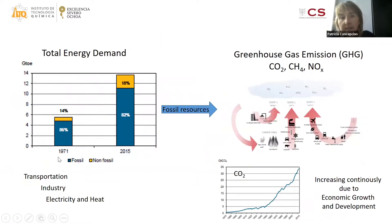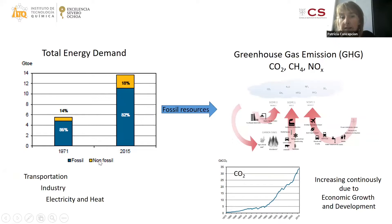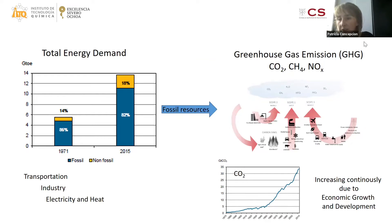If we look at this graph, we can see that nowadays practically 80% of the total energy demand — including transportation, industry, electricity and heat — comes from fossil resources. This means large production of greenhouse gas emissions like CO2, methane, and NOx, which in the case of CO2 is increasing continuously due to economic growth and development.